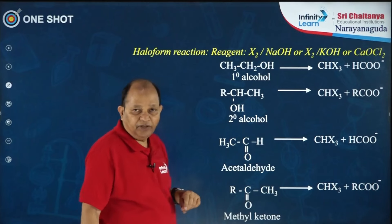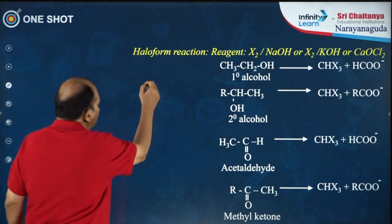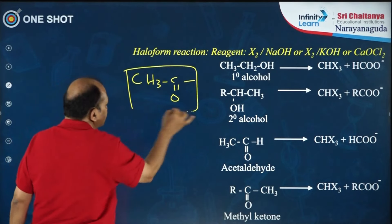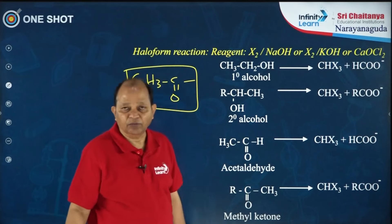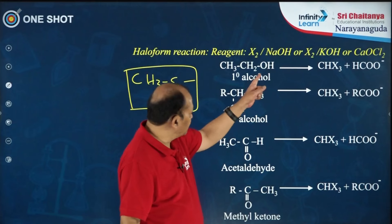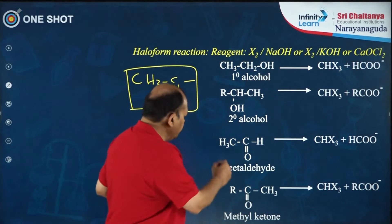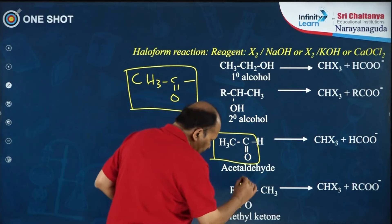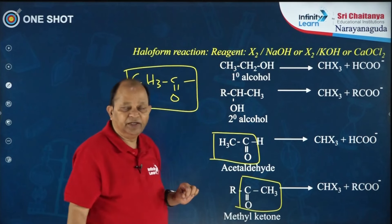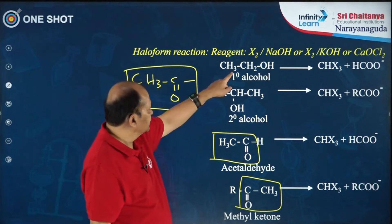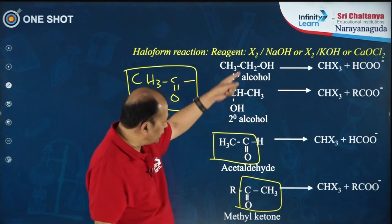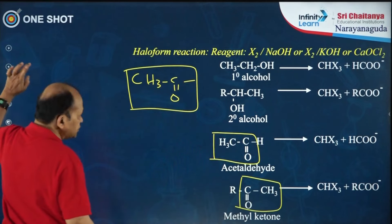The next very important reaction is the haloform reaction. Compounds that contain the acetyl group (CH3C=O) will undergo the haloform reaction — iodoform, bromoform, or chloroform. Primary alcohols, secondary alcohols (specifically ethanol and secondary alcohols that oxidize to methyl ketones), acetaldehyde (which contains the acetyl group), and methyl ketones will give this positive test.